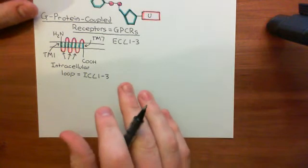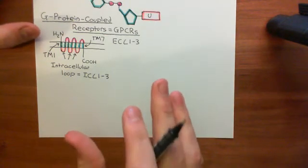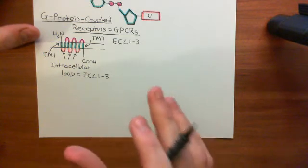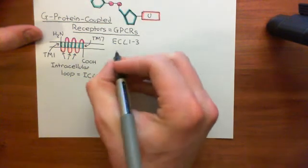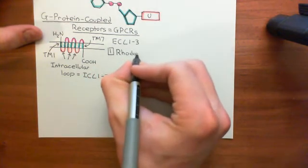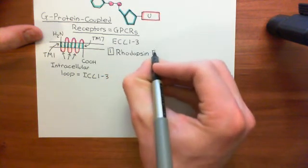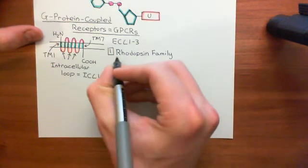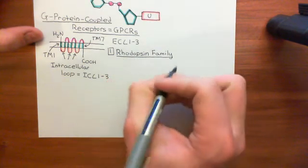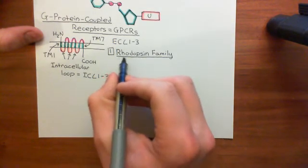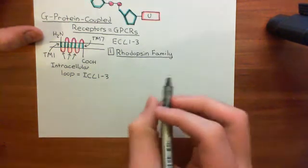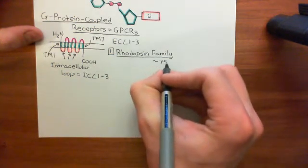Let's discuss the classification of G-protein coupled receptors into five families, because there are 800 different G-protein coupled receptors in humans alone, and to help us understand them we group them into five families. Family number one is the main family, called the rhodopsin family of G-protein coupled receptors. The receptor rhodopsin, which is a receptor for light and is very important in rod cells within the retina, is a G-protein coupled receptor within this family. Nearly all of the notable GPCRs are within this family, making it easily the biggest family with around 750 members.